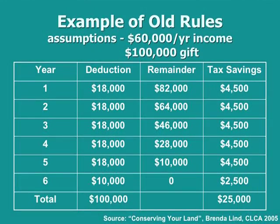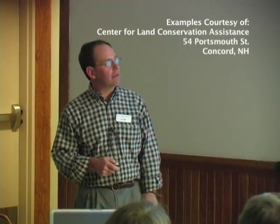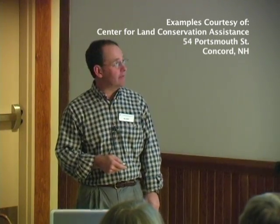Here's an example of the old rules: a gift of $100,000 in property with a $60,000 income over a six-year period. This example is in the Conservation Options book. You can deduct each year 30% of your adjusted gross income — 30% of $60,000 is $18,000. After the first year, you've got $82,000 left of the $100,000. You just keep chipping away at $18,000 a year until year six where you have just $10,000 left, and you've finally deducted the full $100,000. It's not a tax credit — it's a deduction. The actual tax savings work out to $25,000 on a $100,000 gift with $60,000 income.